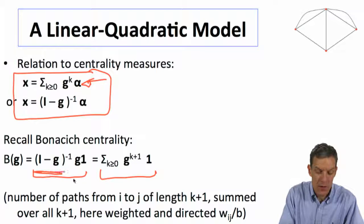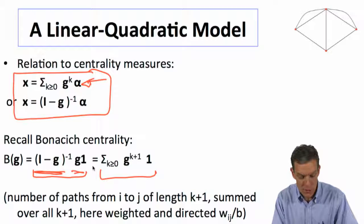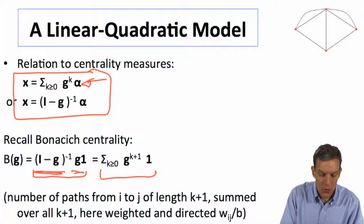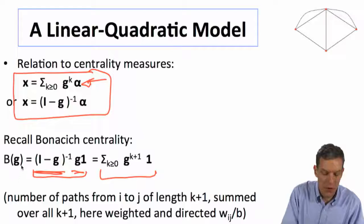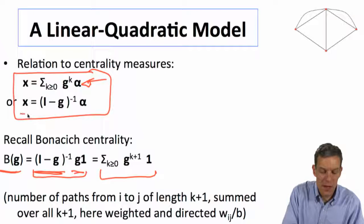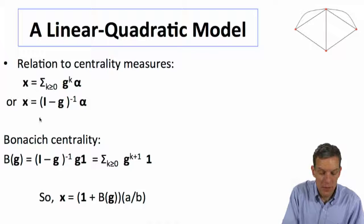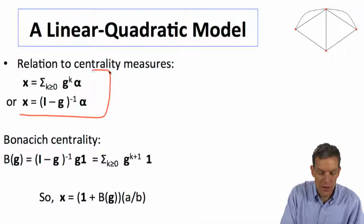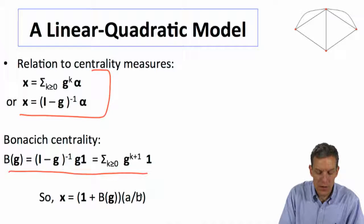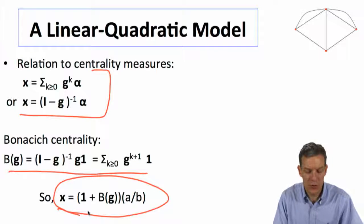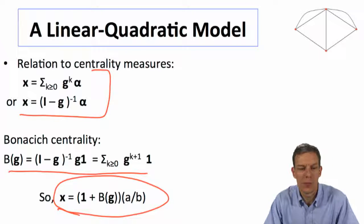That's exactly the calculation we're doing here. And alternatively, we wrote Bonacich's centrality looked like an i minus g to the minus 1 times g times 1. And so if we write Bonacich's centrality in these manners, then we can rewrite the x's. So we've got the x's look like this. Bonacich's centrality looks like this. So alternative representation of the x is that x is equal to 1 plus the Bonacich's centrality times a over b.